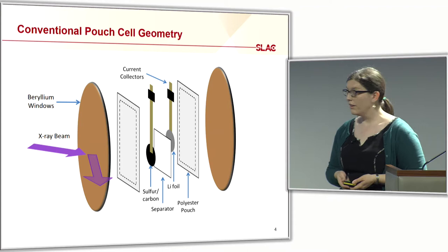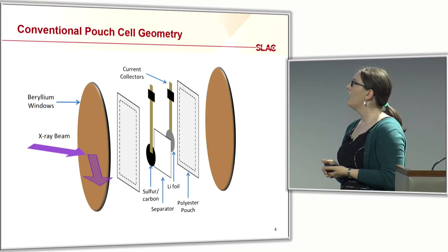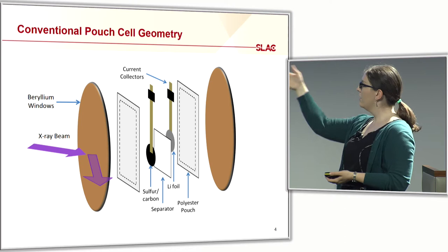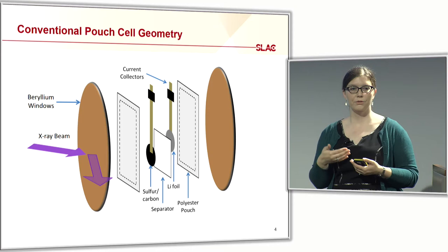Most of you are probably familiar with conventional pouch cell geometry: you have your polymer pouch, then your sulfur-carbon electrode, your lithium anode, separator. We use beryllium windows, which are X-ray transparent, to apply pressure, and the X-ray beam comes in and goes out as in the previous schematic. Pouch cells are easy to make, but what they give you is an average of all the chemistry through the layers, so you lose that spatial resolution.